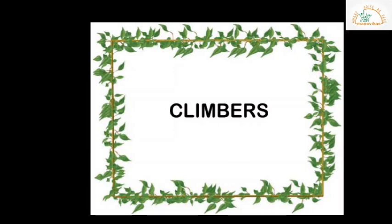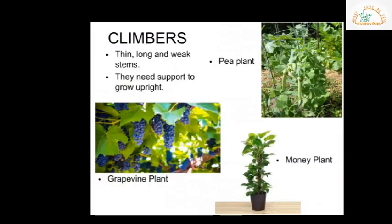This type of plant is called a climber. Climbers are plants that climb up on trees and other tall objects. Climbers have very thin, long, and weak stems which cannot stand upright by themselves — they use support to grow straight. Some examples of climbers are the bean plant, the grape vine, and the very common money plant.